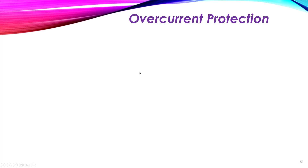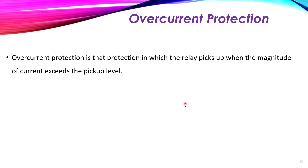In this lesson we discuss over-current protection. From the name, it means we are protecting our circuit against over-current — when the current exceeds a certain value or threshold we put inside our protection system. Over-current protection is the protection in which the relay picks up or operates when the magnitude of the current exceeds the pick-up value, similar to what we discussed before in the trip circuit.